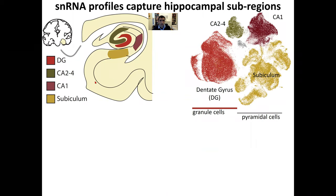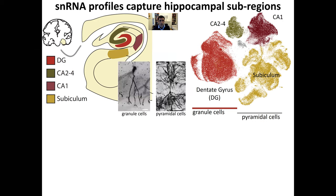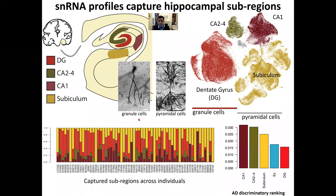We've also used the single-cell RNA-seq data to capture spatial information about the substructures and subregions of the hippocampus. What we see is that the clustering of cells from the hippocampal structure reveals multiple subclusters corresponding to different domains: the subiculum, CA1, CA2/3/4, and the dentate gyrus. These are differentially associated with Alzheimer's, where CA1 appears to be the most pronounced with Alzheimer's disease, followed by these other subregions.